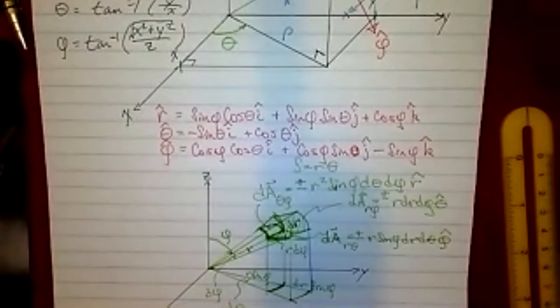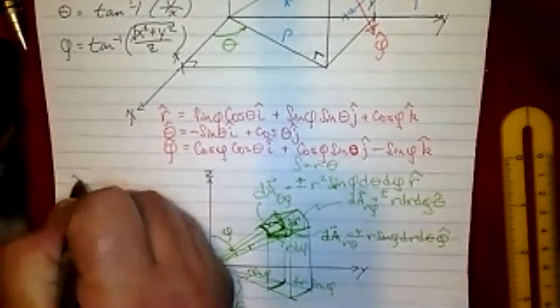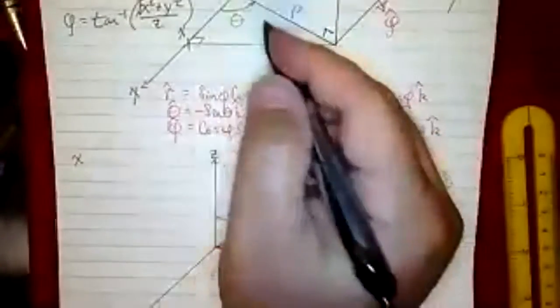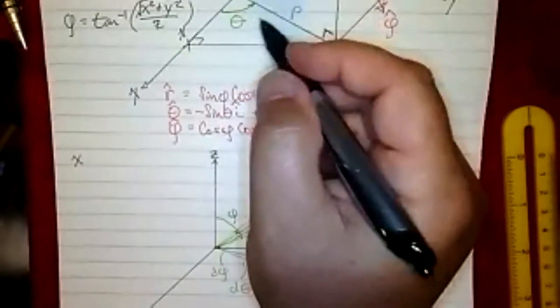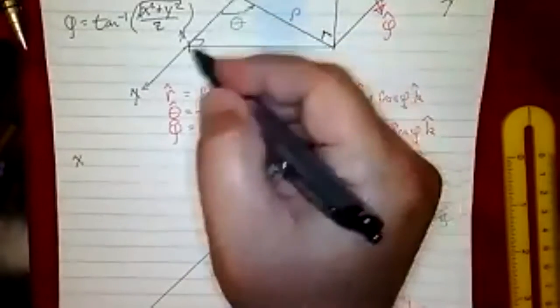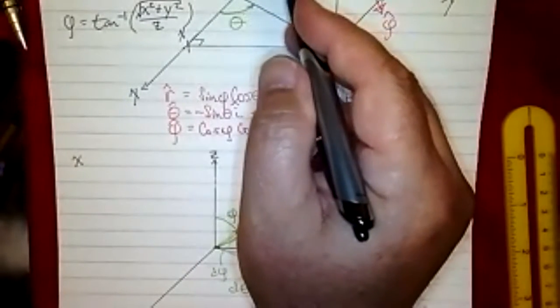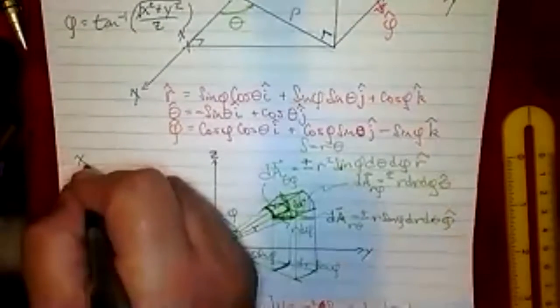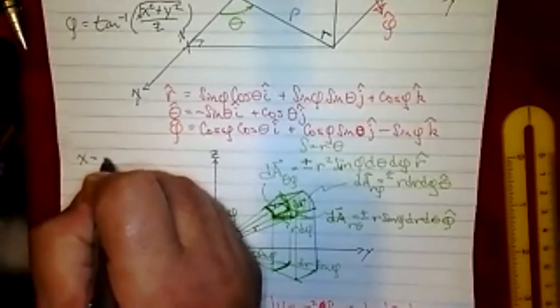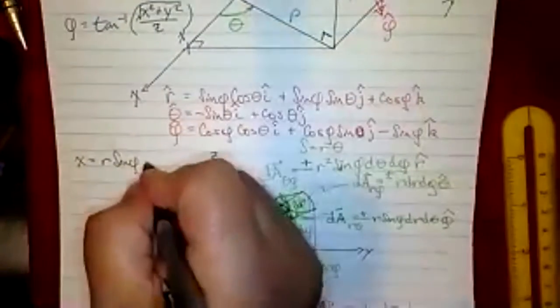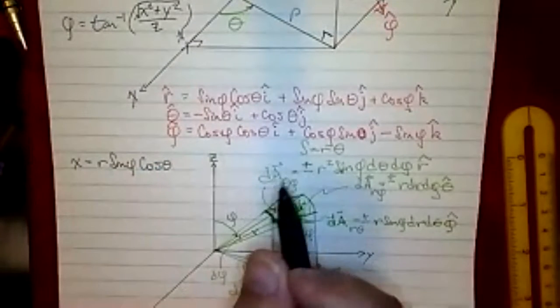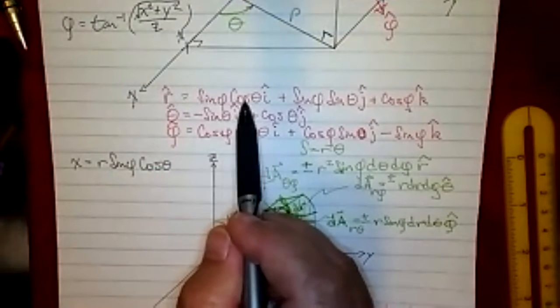What about converting from r, theta, phi to x, y, z? If I want an equation for x, I see that x is going to have to come from rho, because it has to be a projection of r into the xy plane. So I'd have r times the sine of phi, which gives me rho. And then I want to take the cosine of theta. So x equals r sine phi cosine theta.